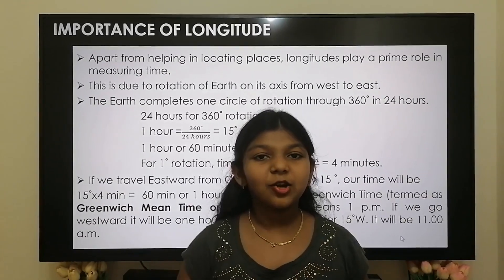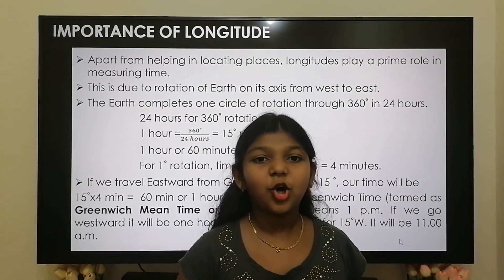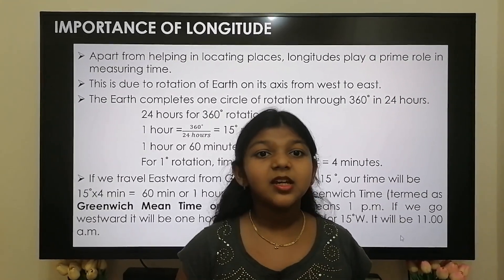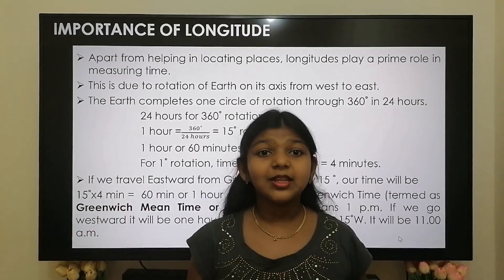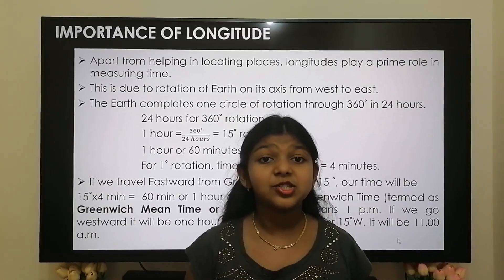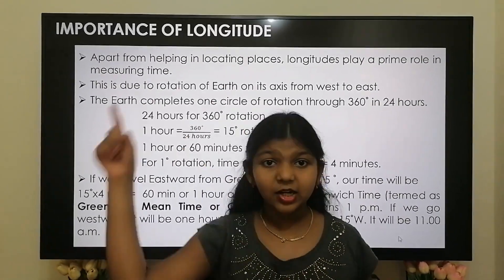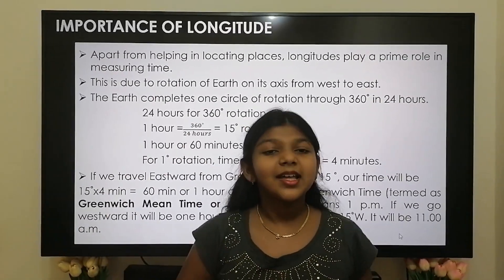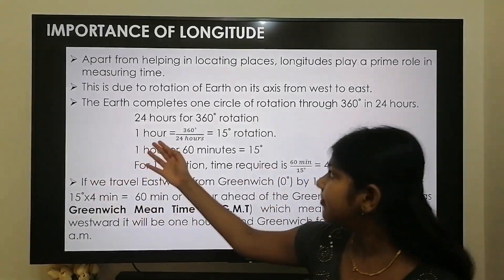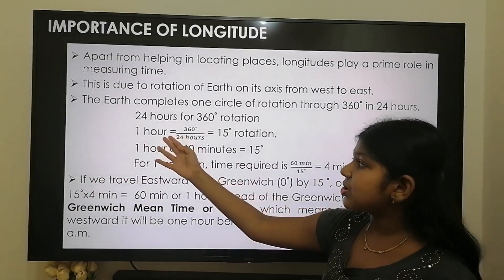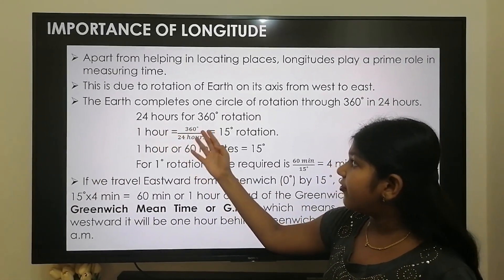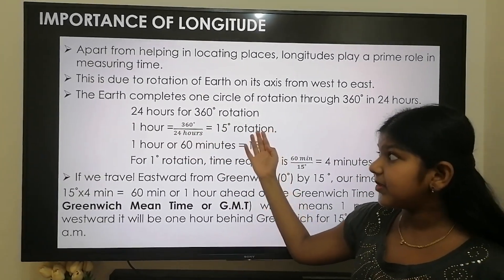It is due to the rotation of the earth on its axis from west to east. We already know that the earth takes 24 hours to complete one circle of rotation, that is 360 degrees. So it takes 24 hours for 360 degree rotation.